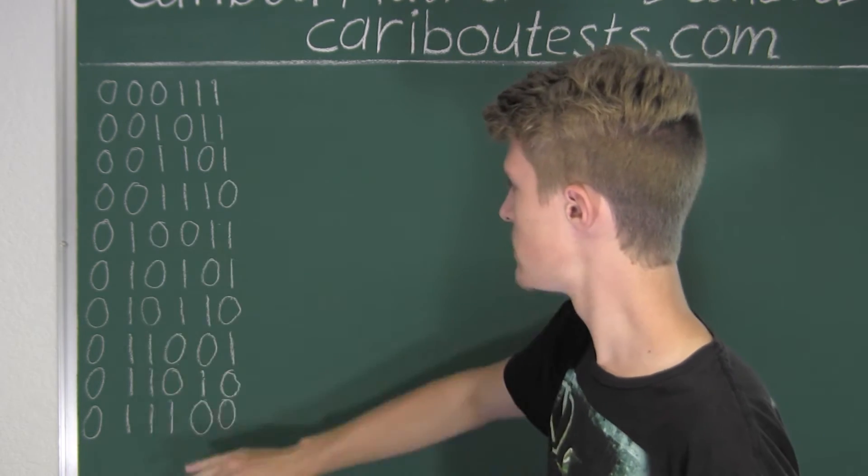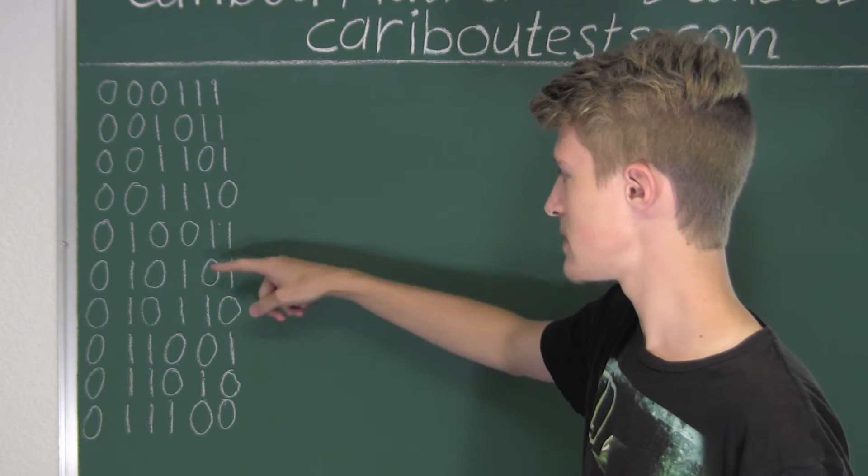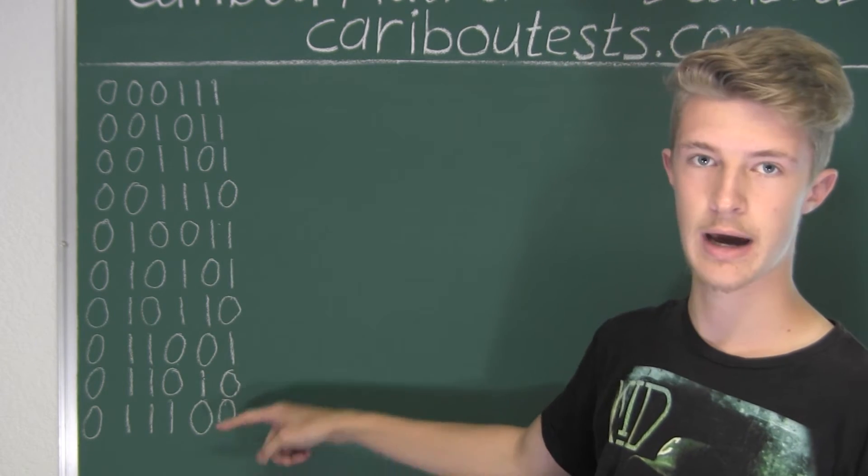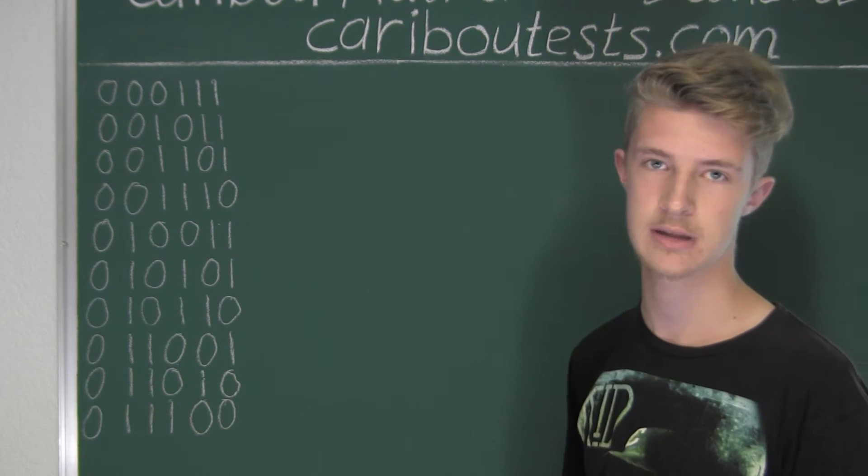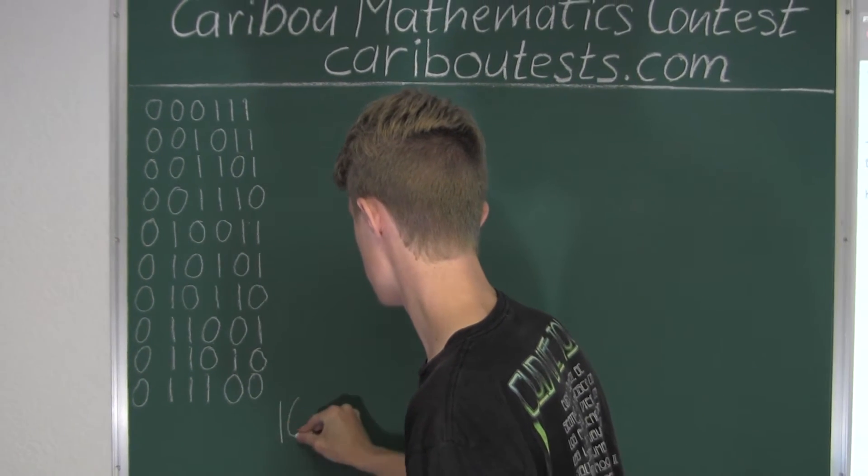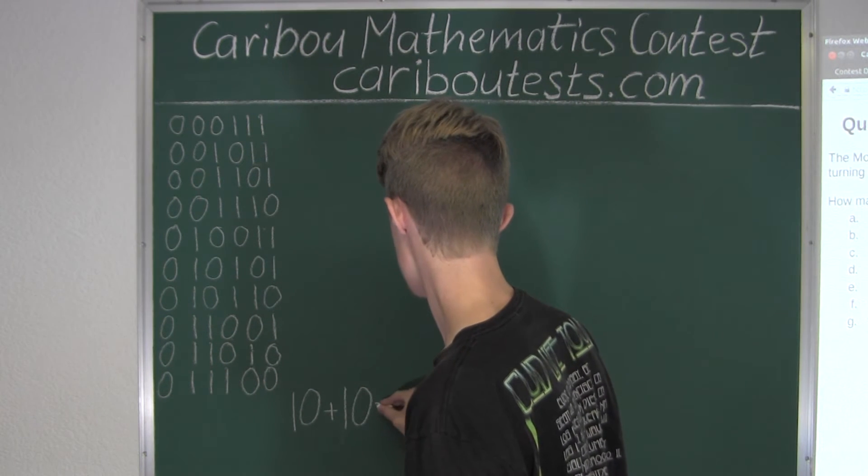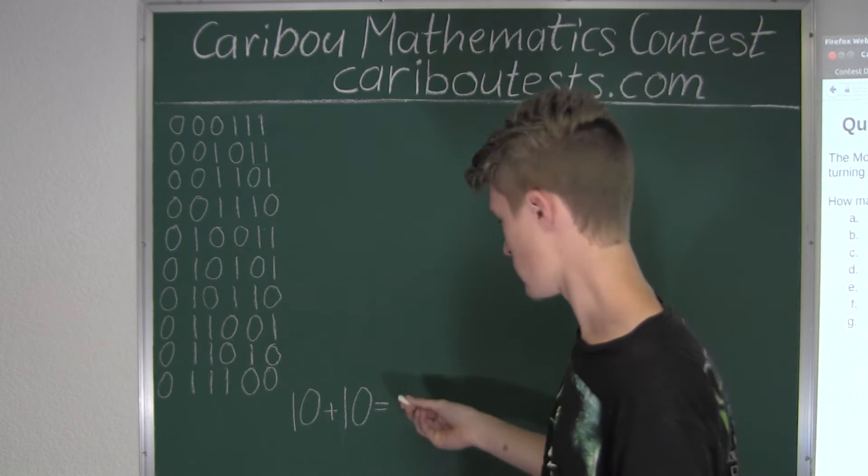So now for all of these numbers, it would just be the same here, except for those 0s and 1s being swapped. So therefore, we would have double this number, and here we have 1, 2, 3, 4, 5, 6, 7, 8, 9, 10, so we would have another 10. So 10 plus 10, and that is equal to 20.